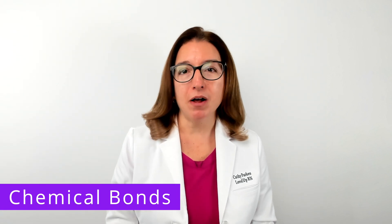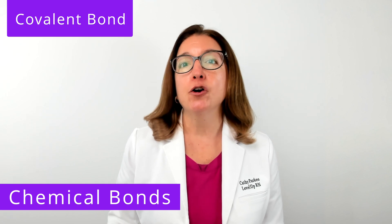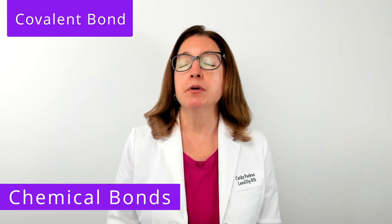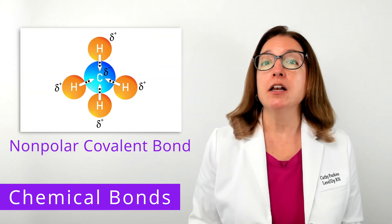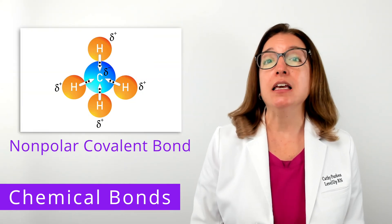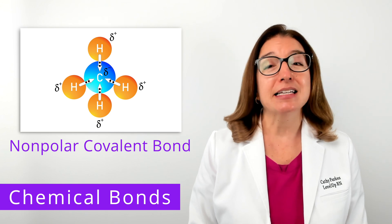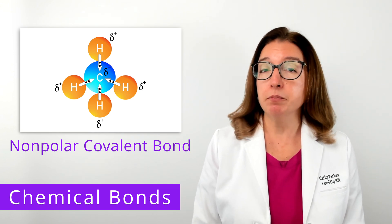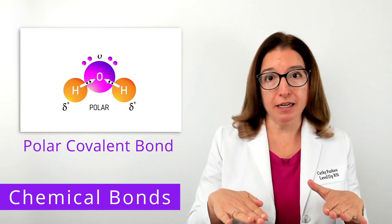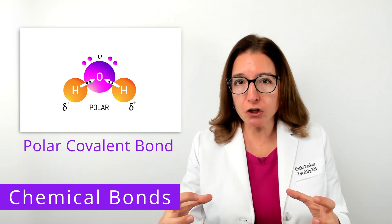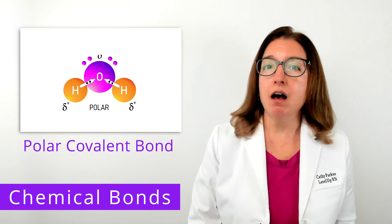We're now going to discuss chemical bonds. The three main types of chemical bonds include covalent bonds, ionic bonds, and hydrogen bonds. A covalent bond results from the sharing of electrons between two atoms. These are the strongest and most common bonds found in living organisms. With a nonpolar covalent bond, electrons are shared equally between the two atoms because there is no difference in electronegativity between the atoms. An example of a nonpolar covalent bond is the bond between a hydrogen atom and a carbon atom. With a polar covalent bond, electrons are not shared equally — they are pulled closer to the more electronegative atom. An example of a polar covalent bond is the bond between oxygen and hydrogen.